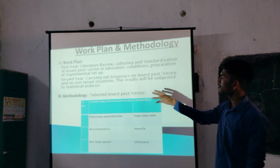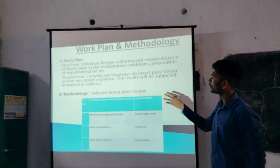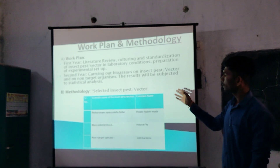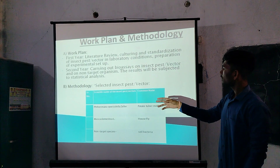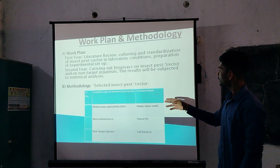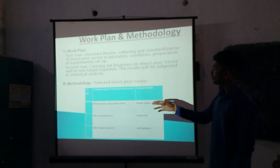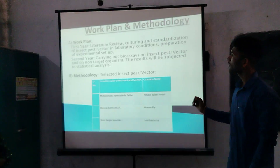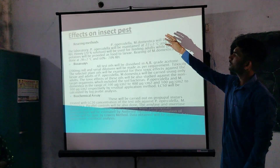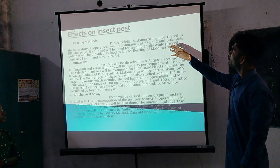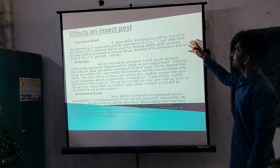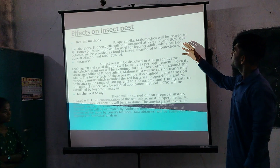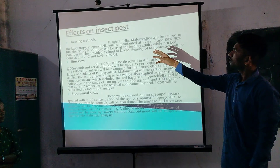B. Methodology. Selected insect pests or vectors — here we can see the table below. It shows the scientific name of the insect pest vectors and the common name. Phthorimaea operculella Zeller, its common name is potato tuber moth; Musca domestica, its common name is housefly. Non-target species: soil bacteria. Rearing methods: P. operculella and M. domestica will be reared in the laboratory. P. operculella will be maintained at 27±2 degrees Celsius and 80% to 90% RH.